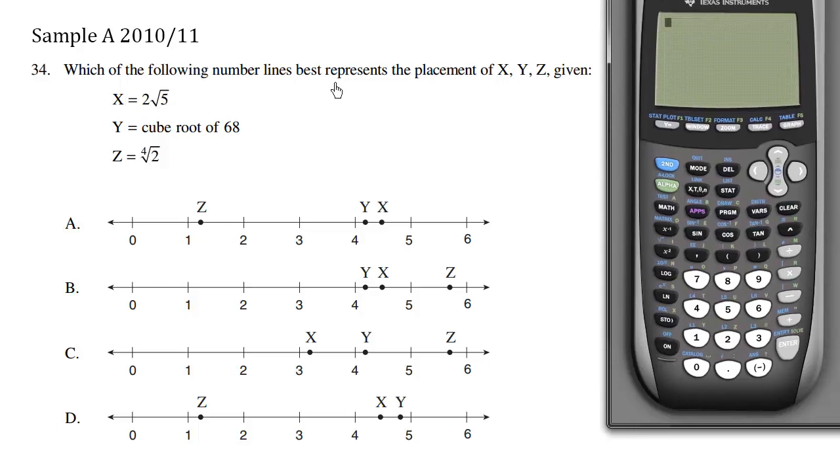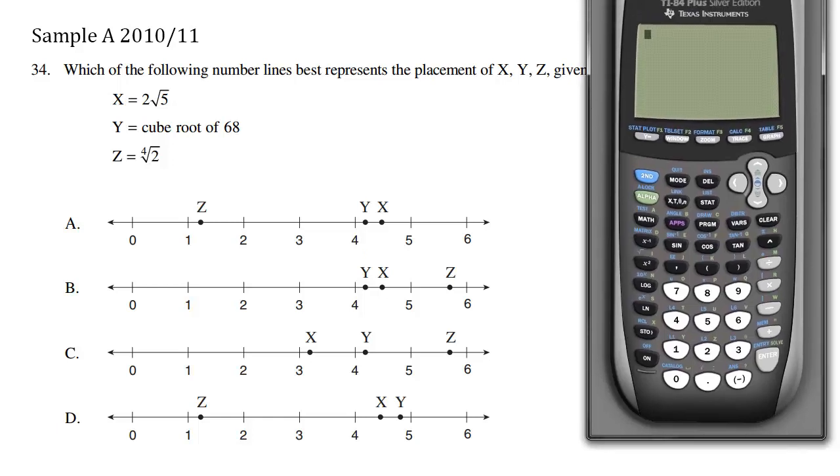Which of the following number lines best represents the placement of x, y, z given x equals this, y equals this, z equals this? So we're just talking about values, so if we have access to a calculator, we should use it.